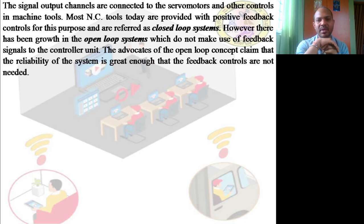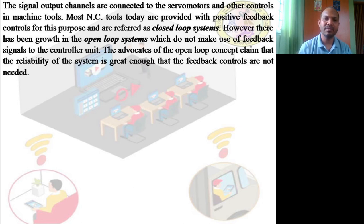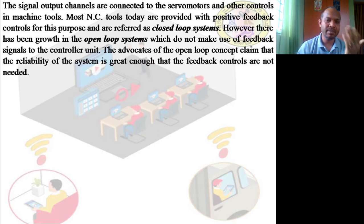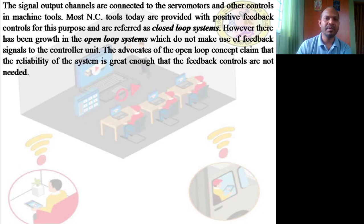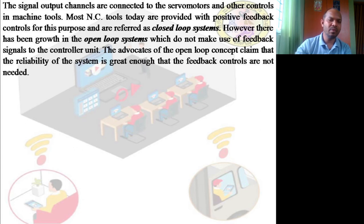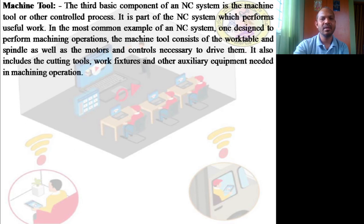There are also open loop systems, which do not use feedback signals to the control unit. If a feedback system is used, it is called a closed loop system; without feedback it is an open loop system. Feedback should be used for more accurate and precise work. Advocates of open loop claim the system is reliable enough that feedback controls are not needed, and in some cases they are simply not used.